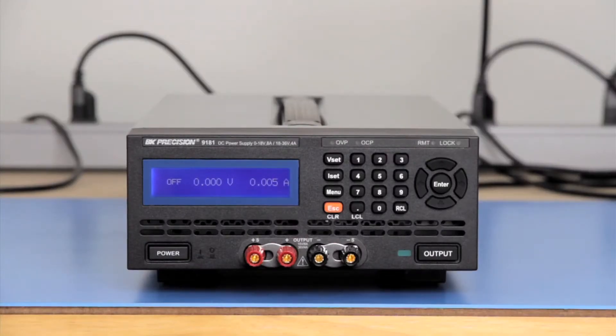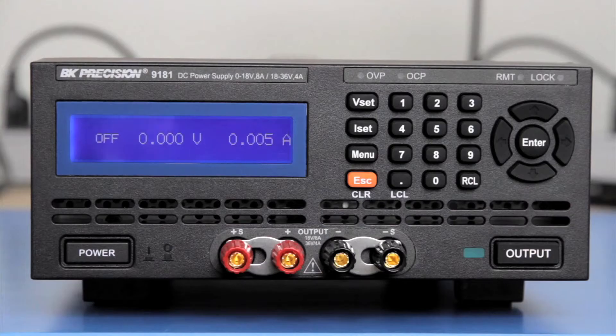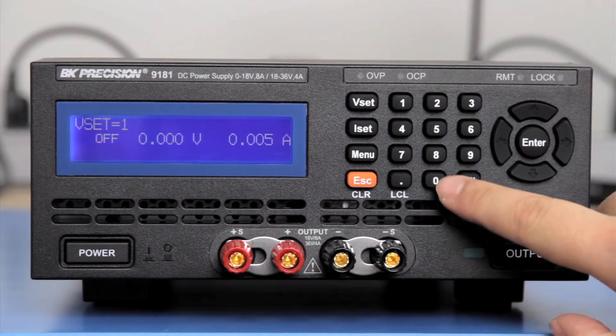The programming or setting accuracy determines how close the set voltage and current values are to the actual value. It is expressed as a percentage of the setting plus offset. So, if we set the power supply to 10V and 2A...